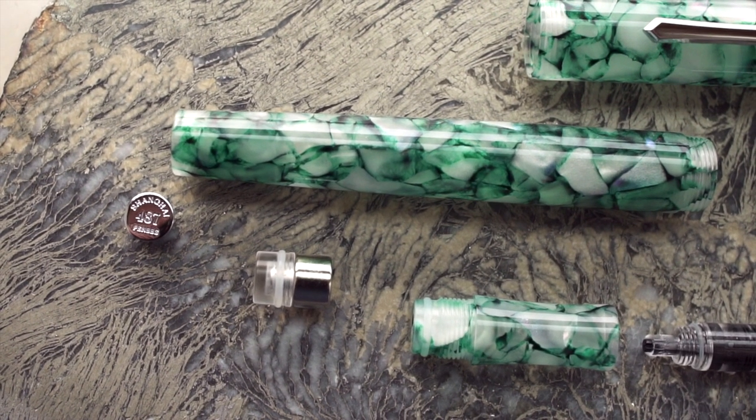Here's the very thin fins on their feed and the tip of their nib. It's kind of upturned like a Fude nib. Here's the pen disassembled on a piece of feather pyrite.